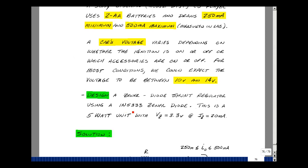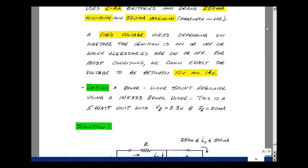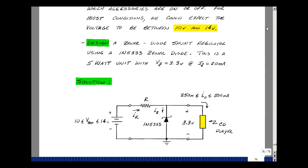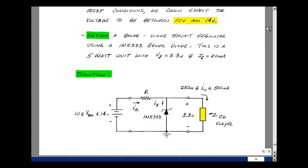I had a 1N5333 Zener diode, which is a 5 watt unit. It has a 3.3 volt Zener voltage at a measured current of 20 milliamps. You can think of this as the minimum current in the Zener diode. If I had this much current, I could be guaranteed I'd have this voltage across the Zener.